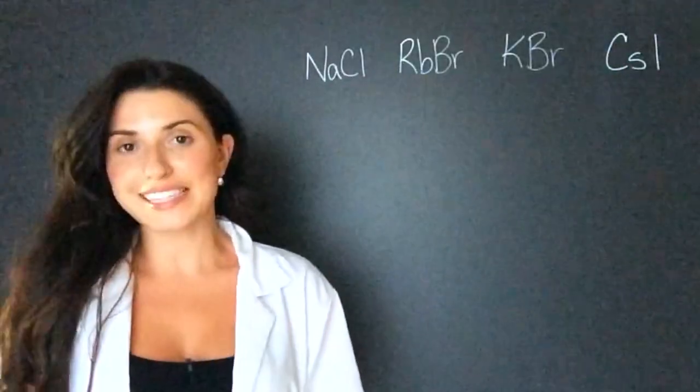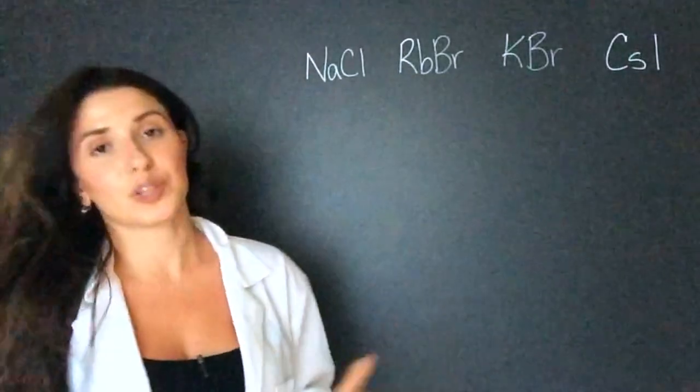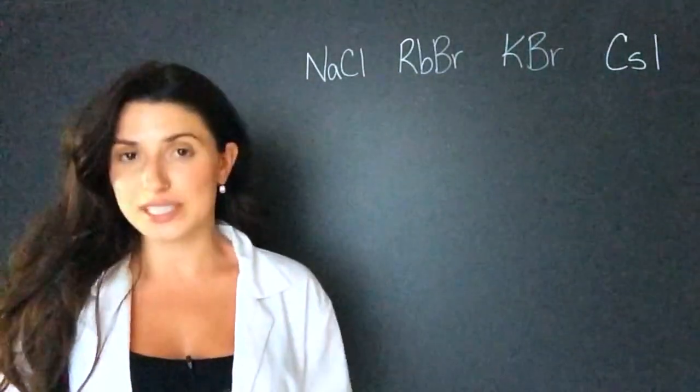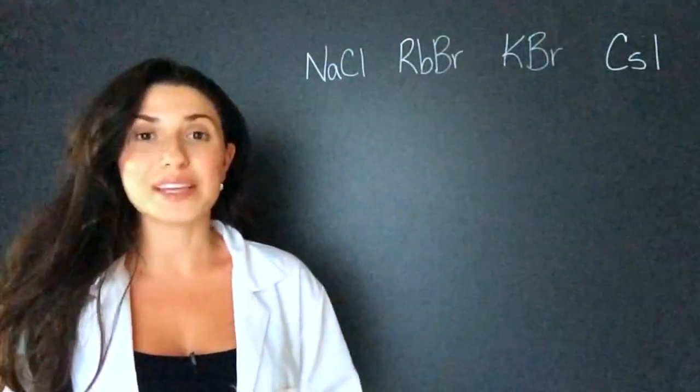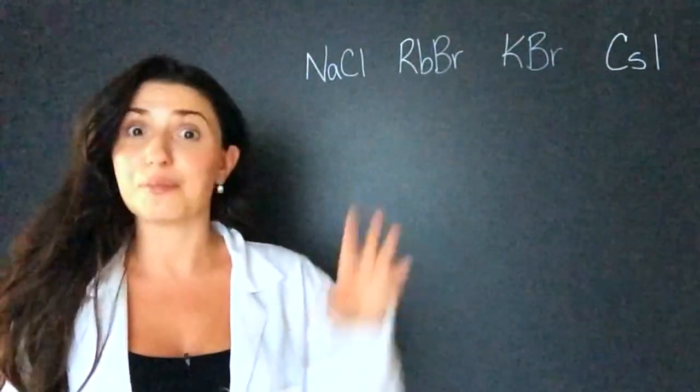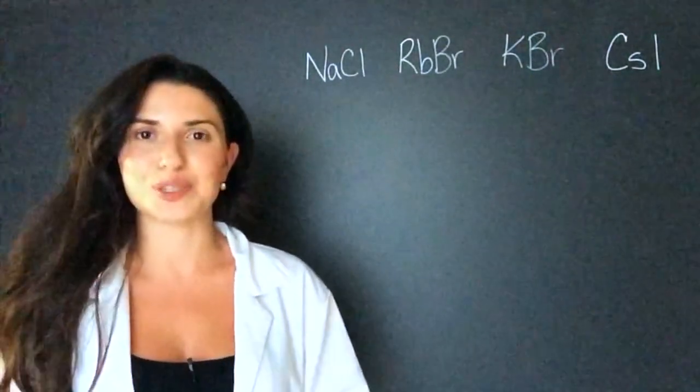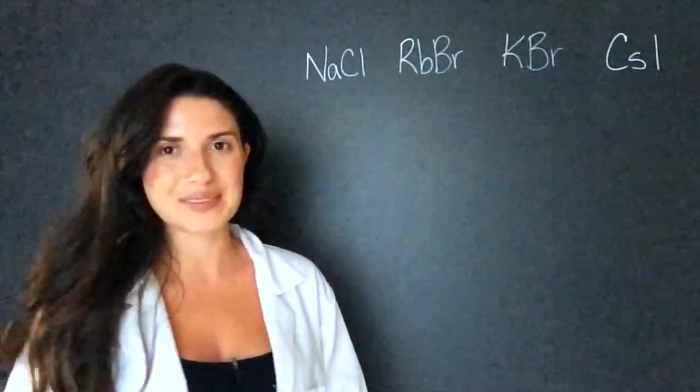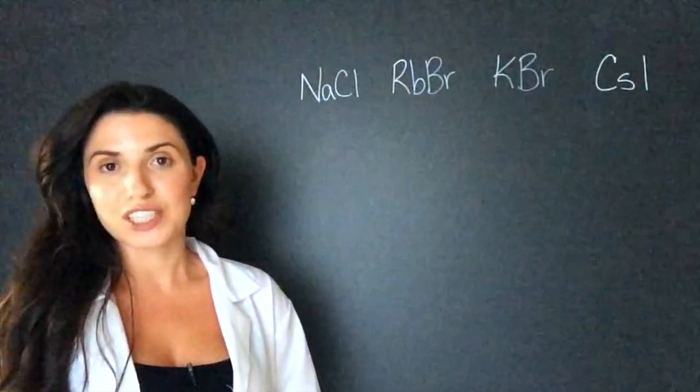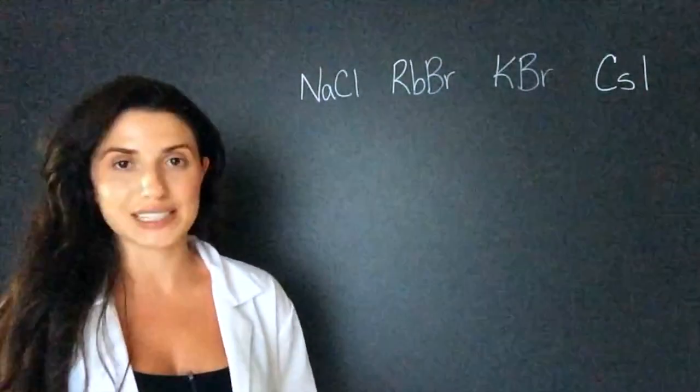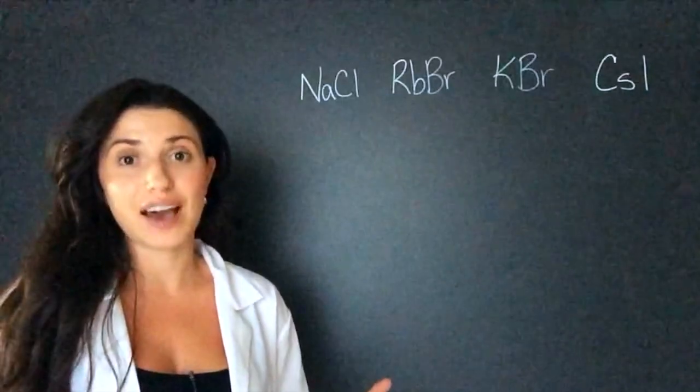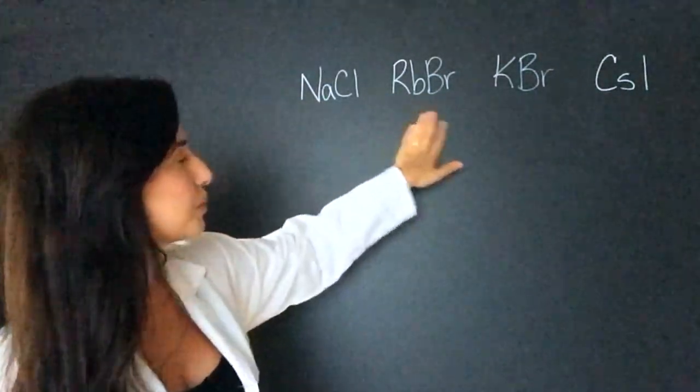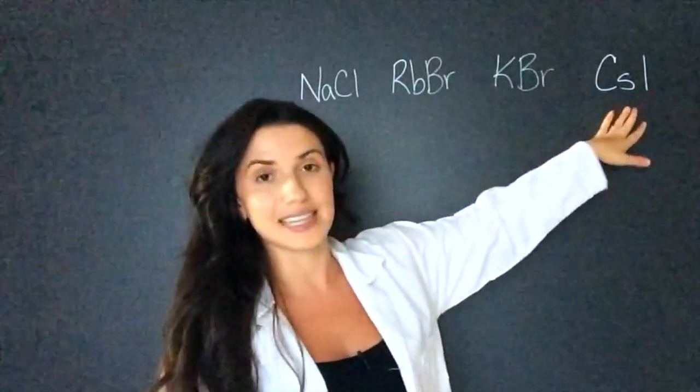So for my example I have four molecules here and I have to rank them in order of increasing melting point. So that means I have to put them in order of biggest to smallest, which would be lowest melting point to highest melting point. My trick for these types of questions is look at the molecules individually. So I'm going to look at just the first half of each molecule. I have sodium, rubidium, potassium and cesium.